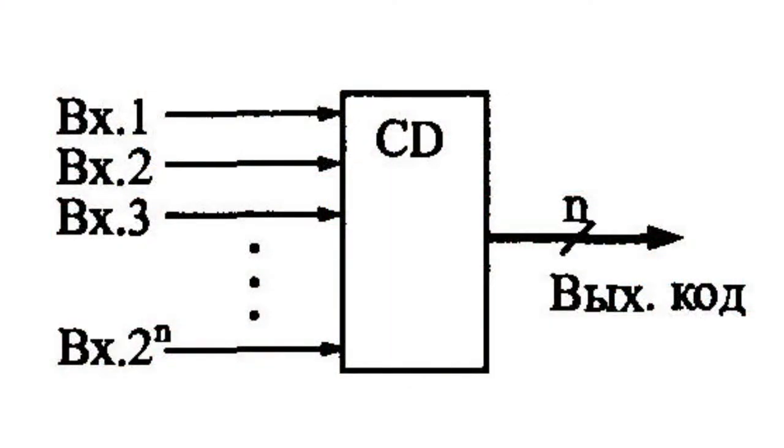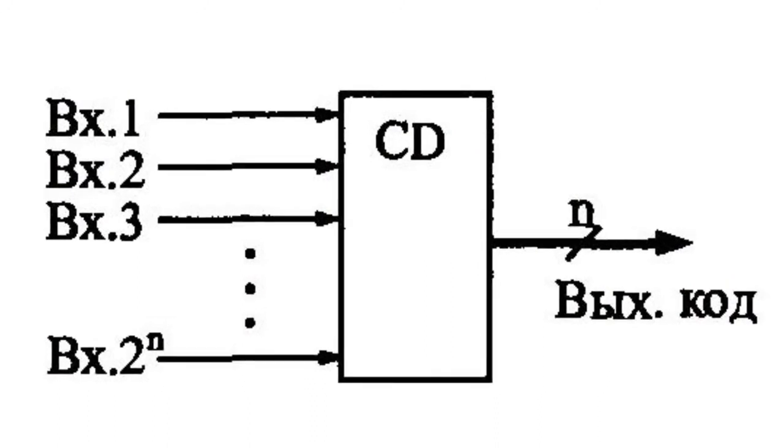A complete binary scrambler has N outputs and 2 to the power of N inputs, where N is the code length. In schematics, microcircuits of scramblers are indicated by the letters CD, meaning coder.